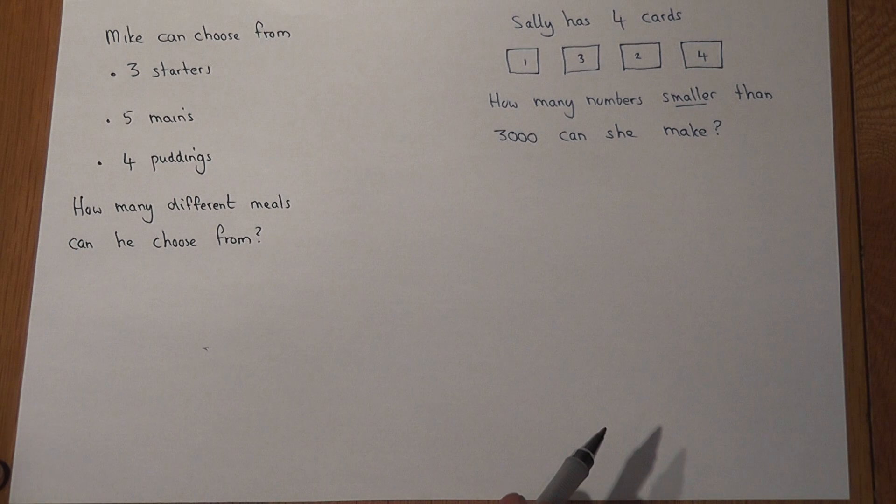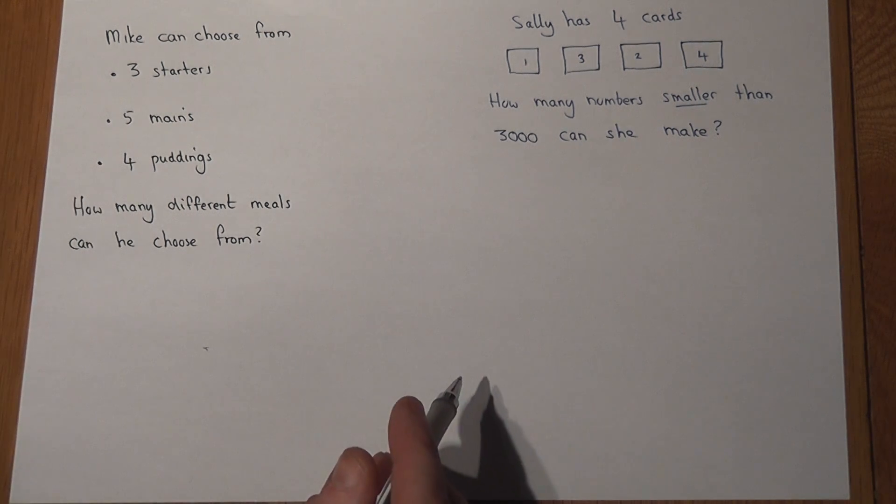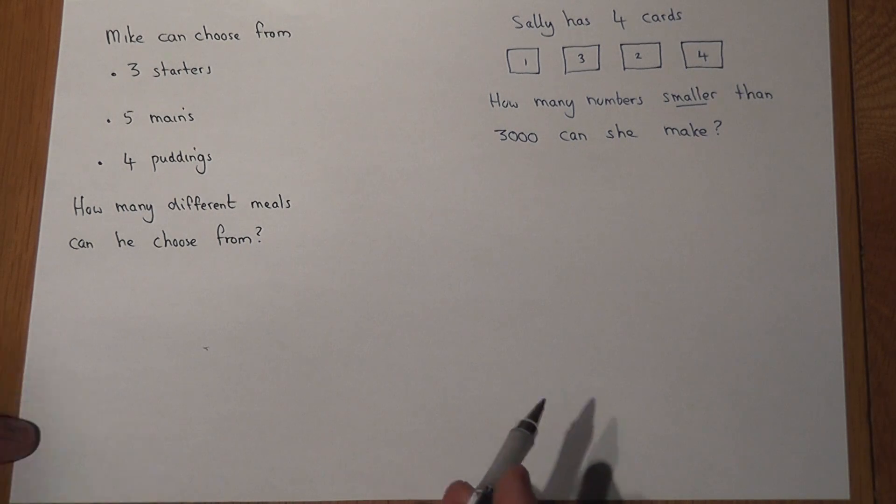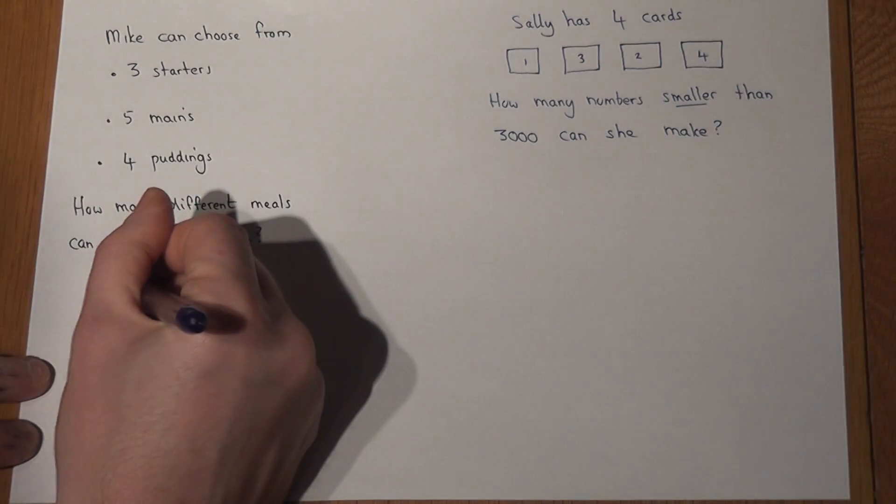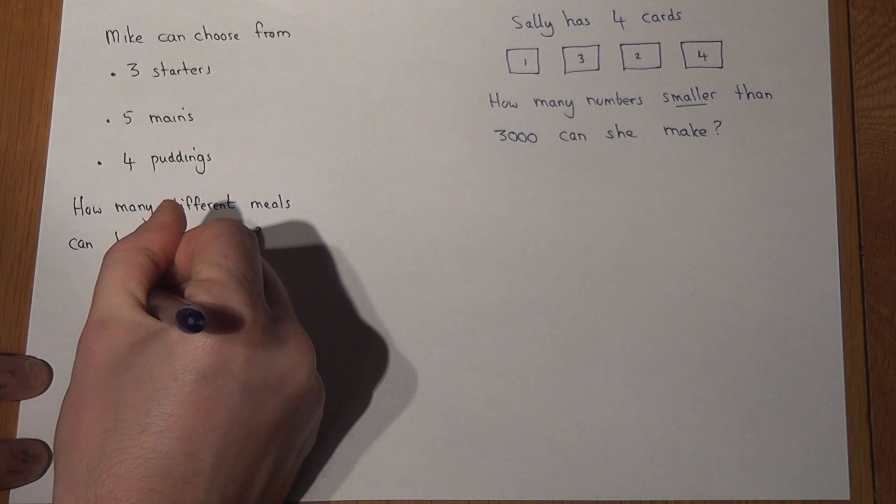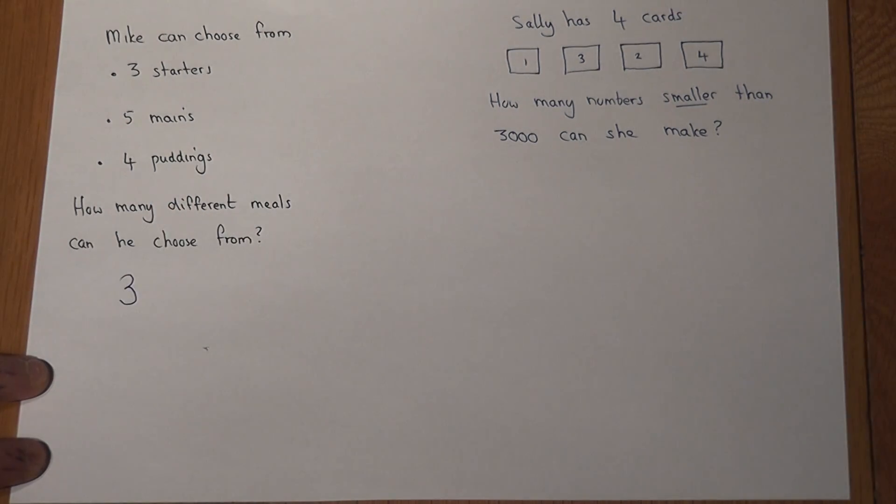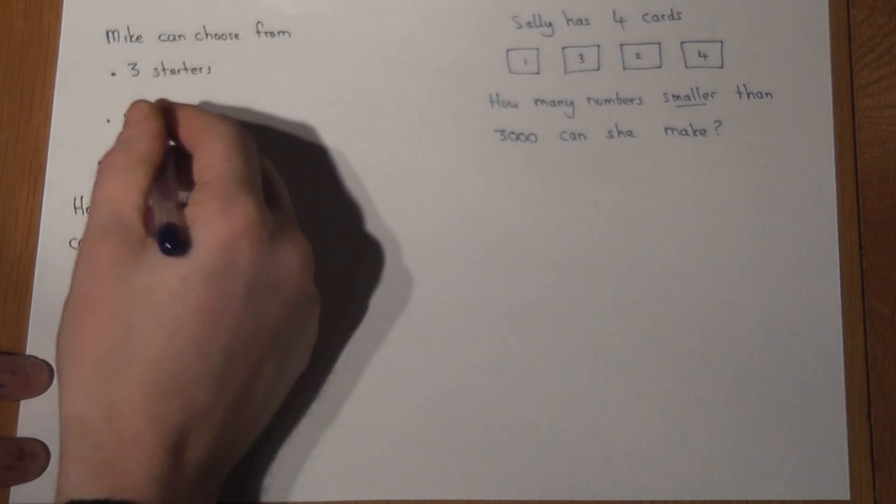There's a really simple way to work this out, and it's as follows: there are three starters, so he's got a choice of three to begin with. He then has a choice of five mains.